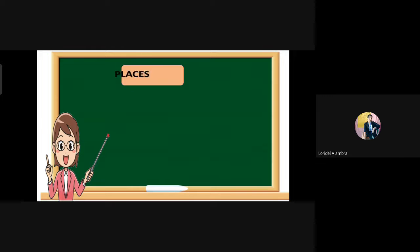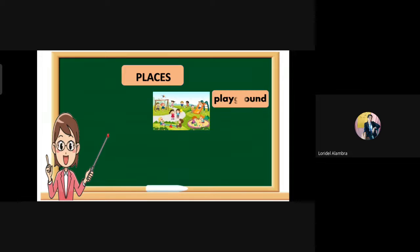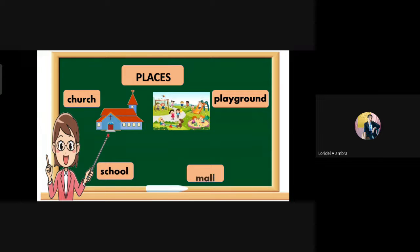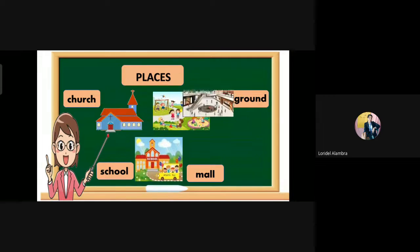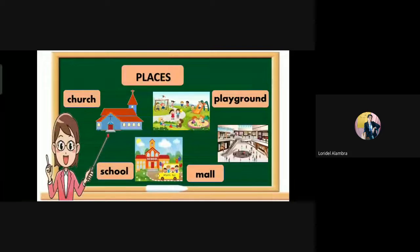Next, places. I have examples of different places — like playground, church, school, and mall. They also don't have a specific name, so they just start with a small letter.